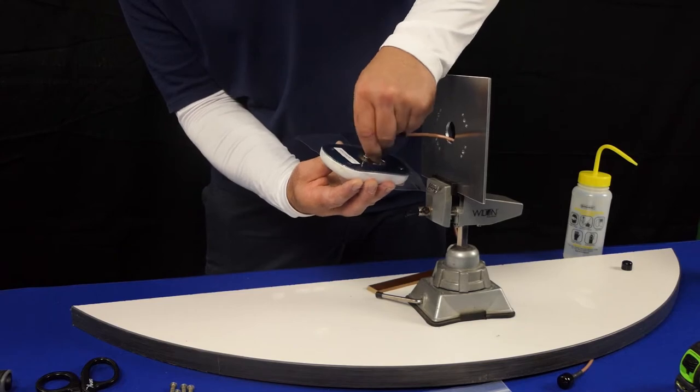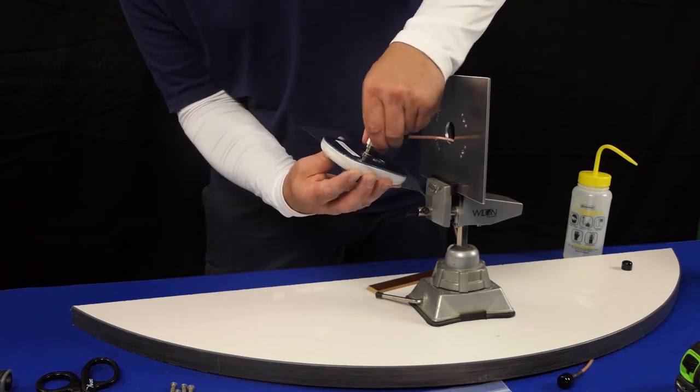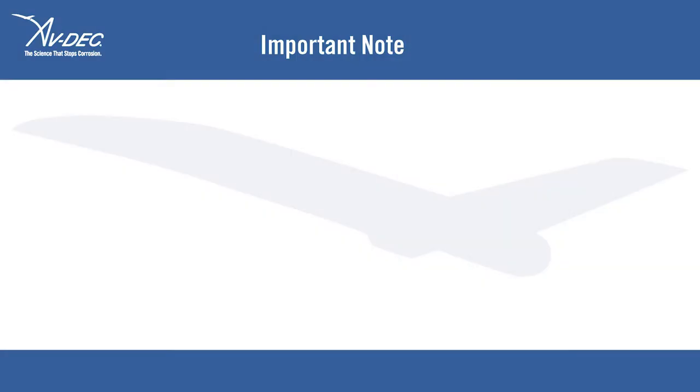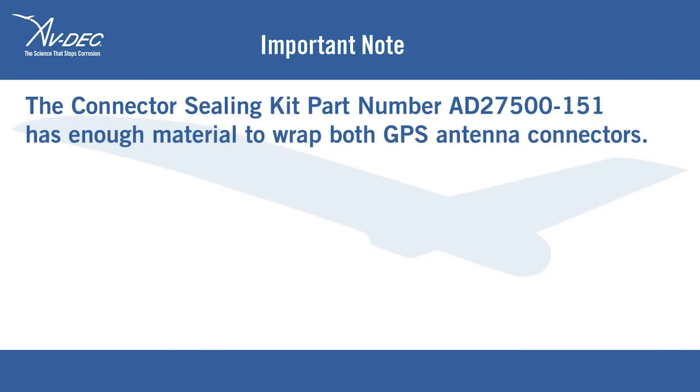Orient and install connector to antenna. The connector sealing kit, part number AD27500-151, has enough material to wrap both GPS antenna connectors.